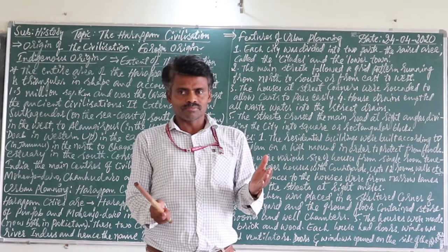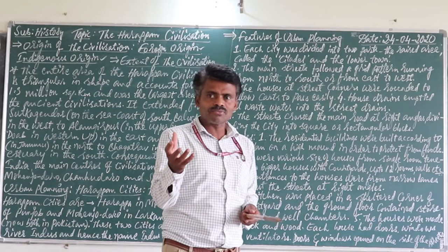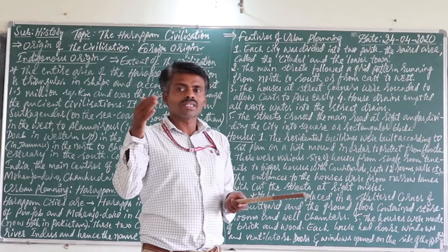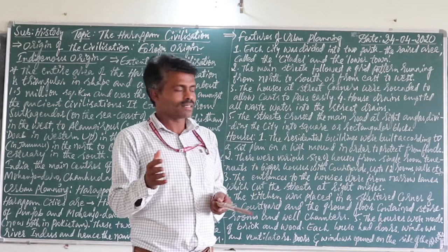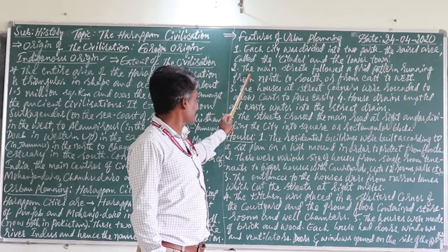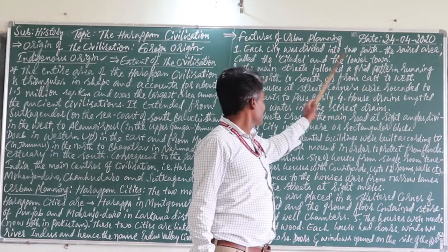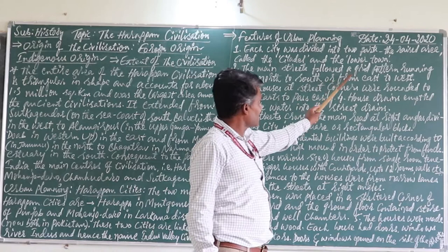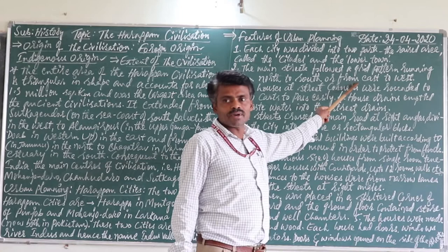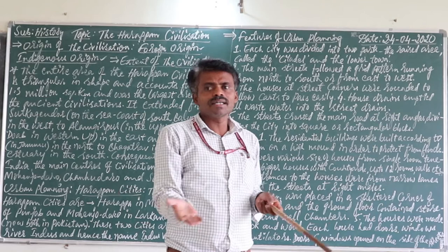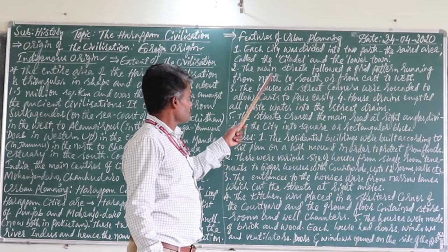For example, today if you go to construct a home, we see the direction — which direction is good for living, where the ventilation is good, where the light is good, where to keep windows. The main streets followed a grid pattern running from north to south or from east to west — this is very important. If asked about the characteristics of urban planning, you need to write clearly that the streets followed a grid pattern running from north to south or east to west.